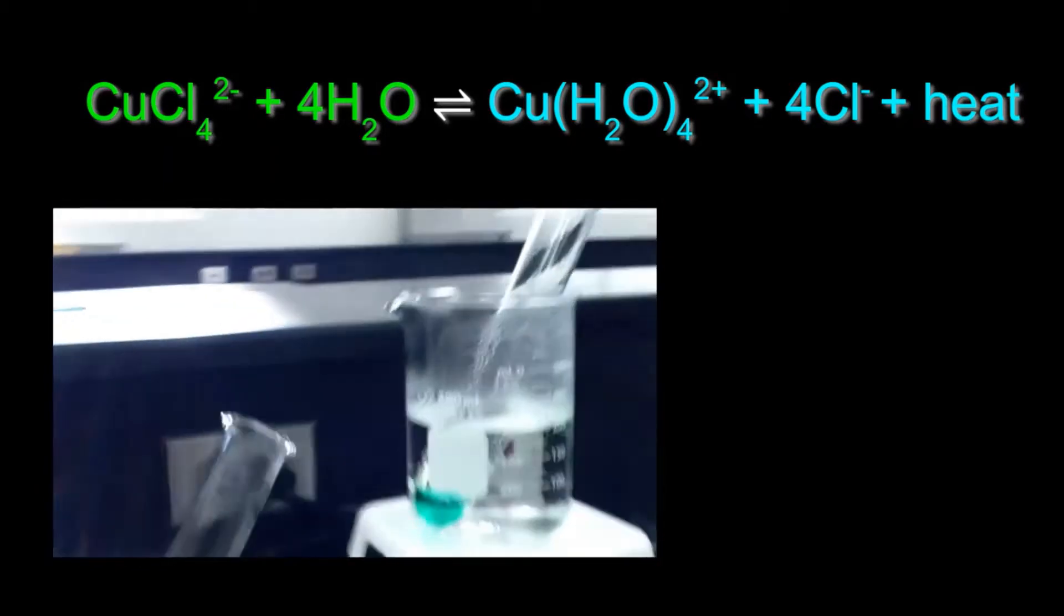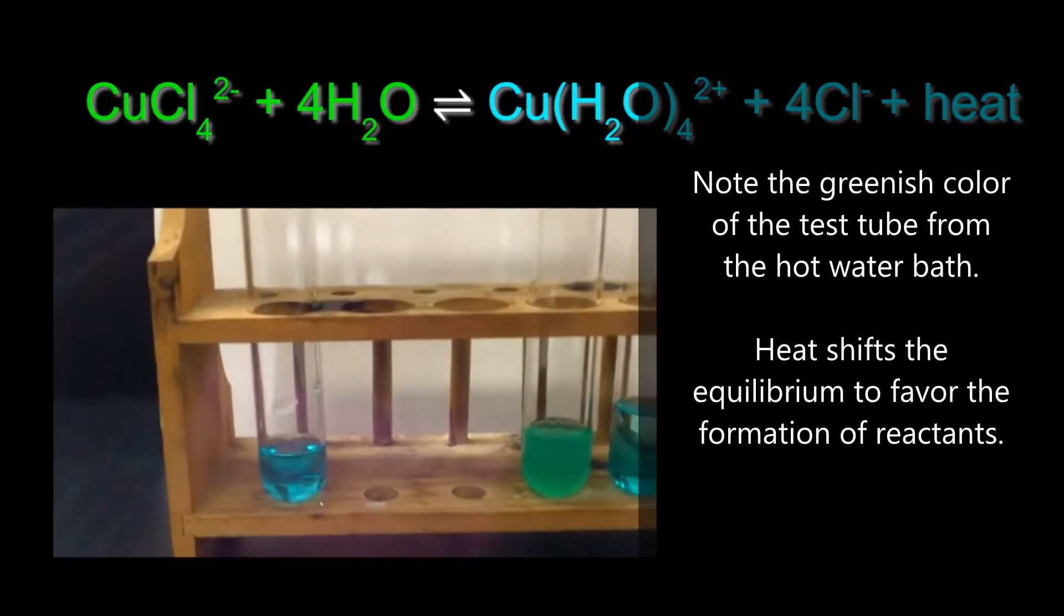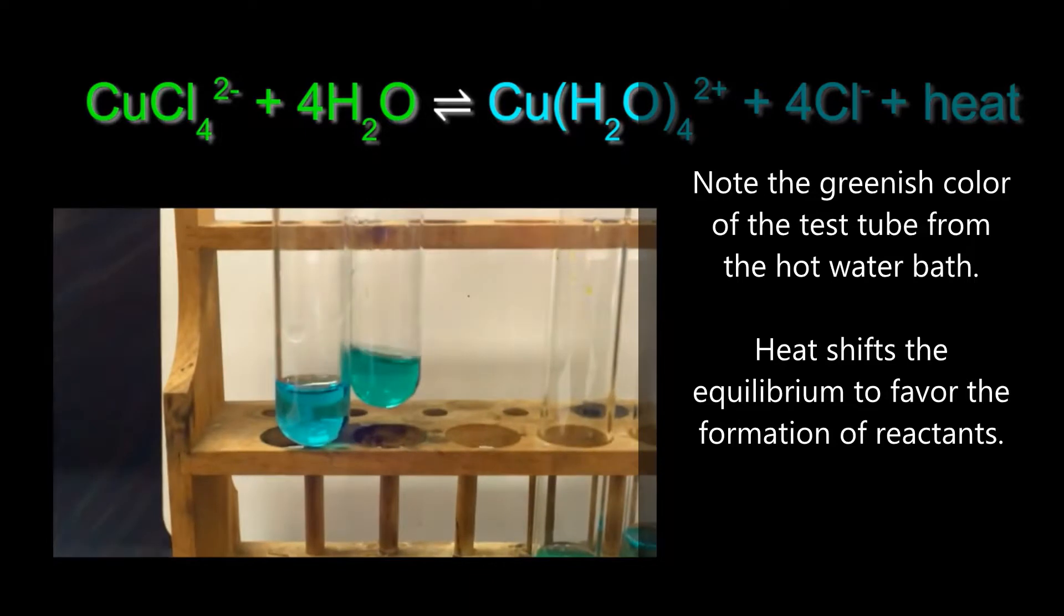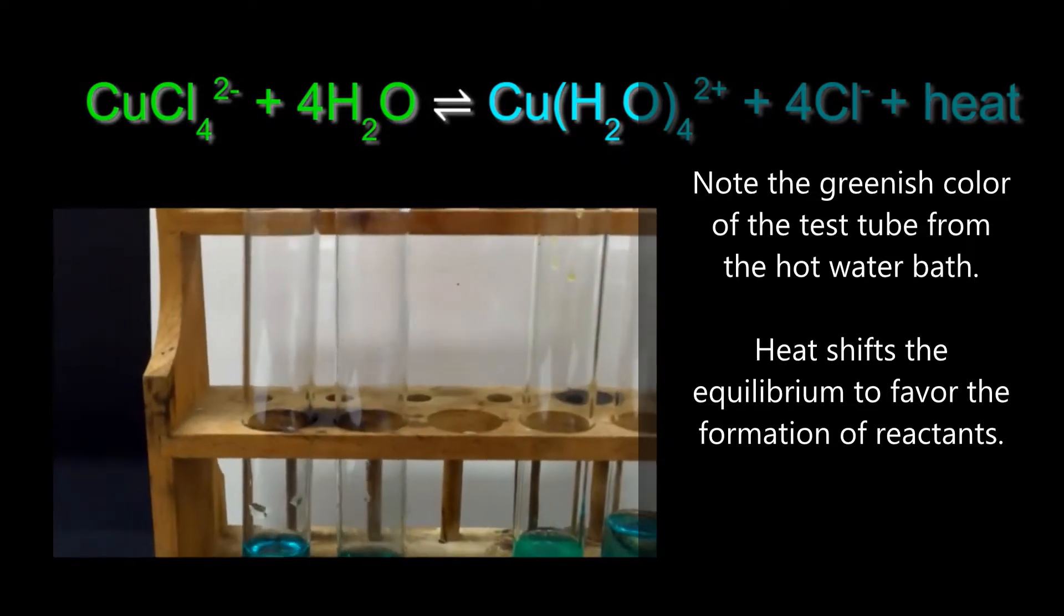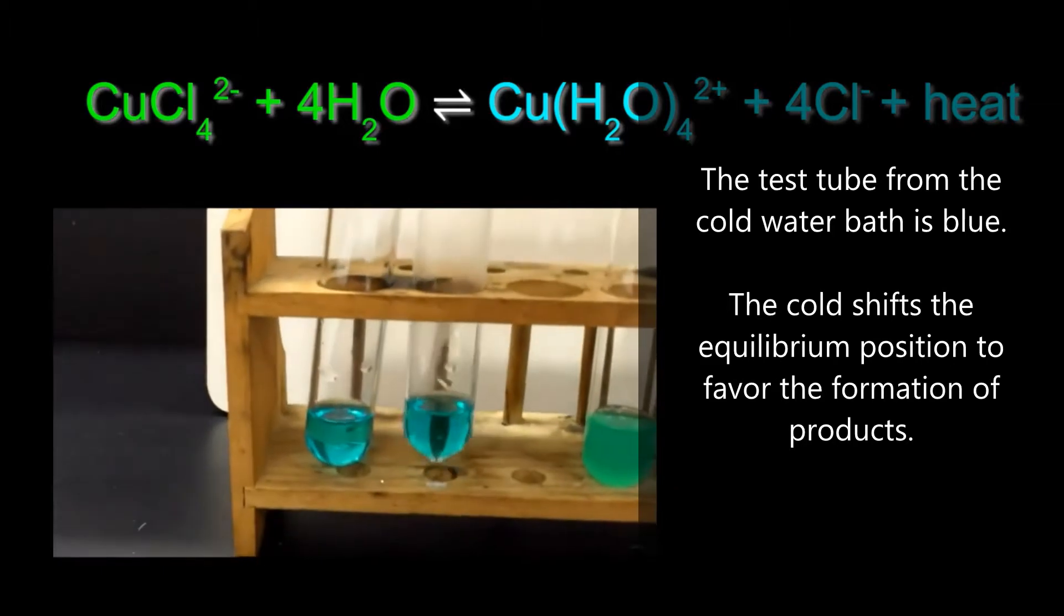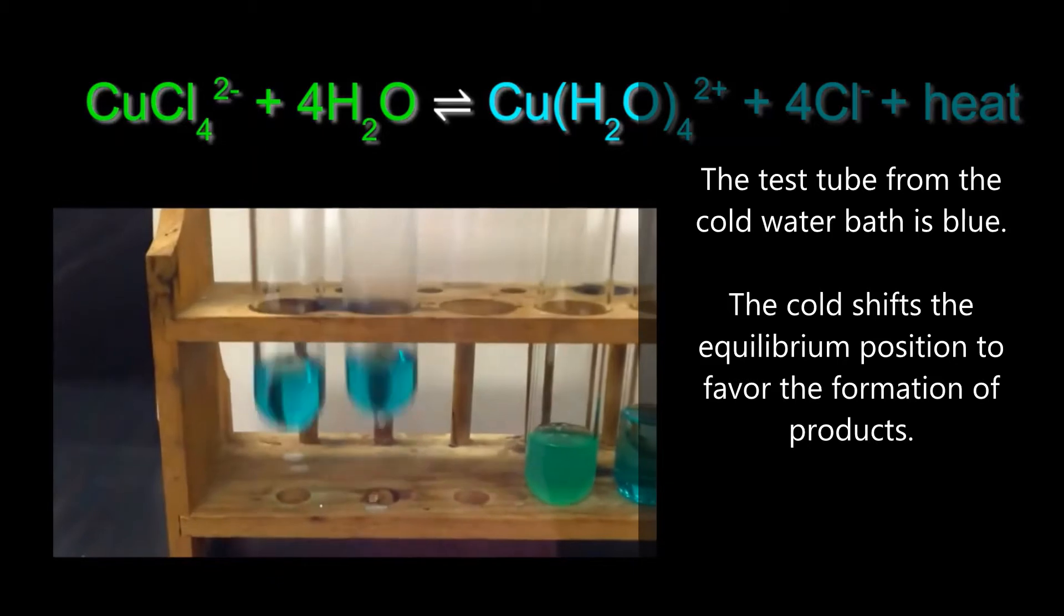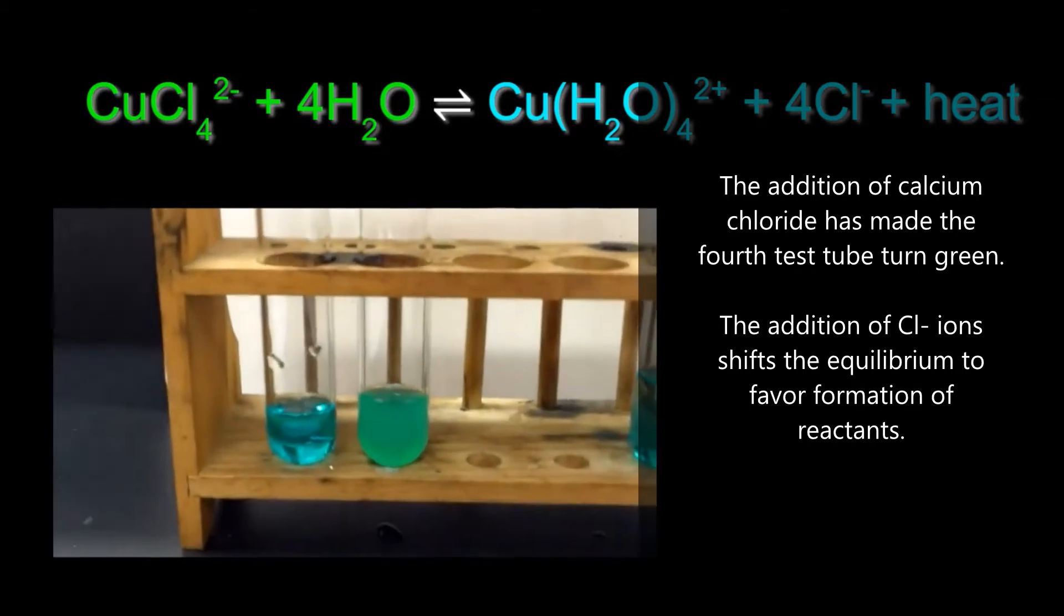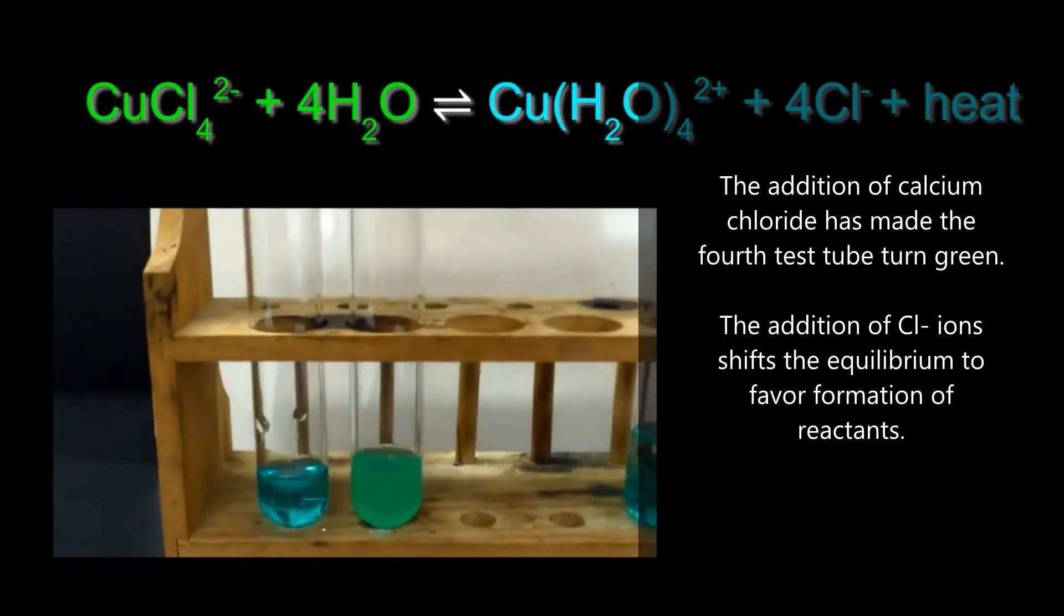Notice the color of the tubes. Note the greenish color of the test tube from the hot water bath. The heat has shifted the equilibrium position to the left. Notice the tube from the cold water bath is blue. The absence of heat shifts the equilibrium position to the right. Notice the addition of chloride ion from the calcium chloride has caused the test tube to turn green.